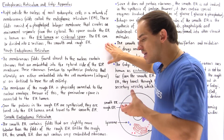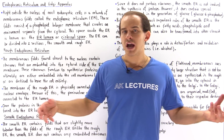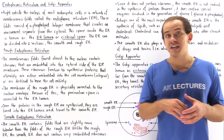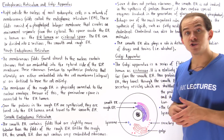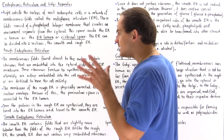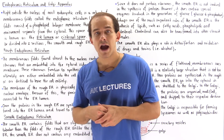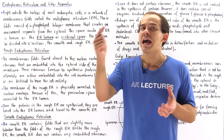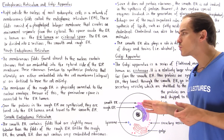The ER can basically be subdivided into two regions: the smooth ER and the rough ER. The membranous folds found closest to the nucleus contain ribosomes embedded on the cytosol side of our endoplasmic reticular membrane — this is what makes it the rough ER.